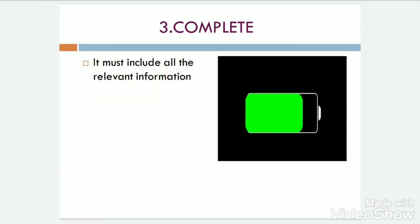Now the third one is complete. It must include all the relevant information. You need to answer who, what, when, where and why — all the five W's. So if you are talking about a particular thing, you need to talk about who is doing it, what made the person to do it, when it happened, where it happened, and why.